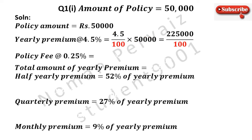Divided by 100 comes as it is. Now if we divide 2,25,000 by 100, it becomes 2250 rupees.